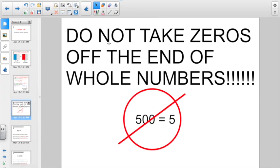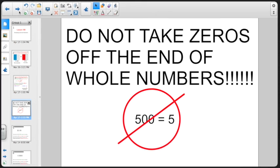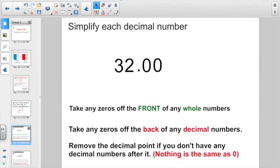But do not take any zeros off the end of whole numbers. It seems like I go through this lesson with fifth graders sometimes, and all of a sudden they want to tell me that 500 is equal to 5. And they're saying, Mr. Rines, you said we could take zeros off the end. Only take zeros off the end of decimal numbers, not off of whole numbers.